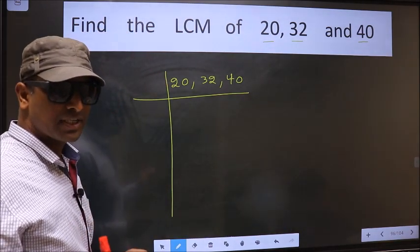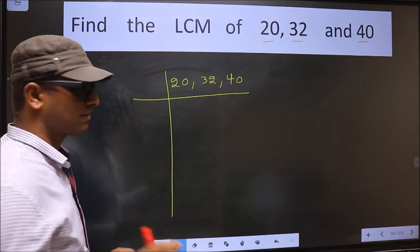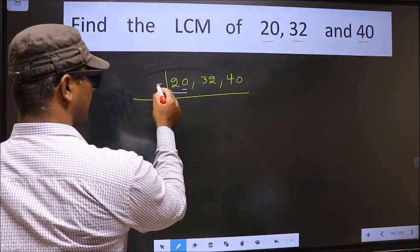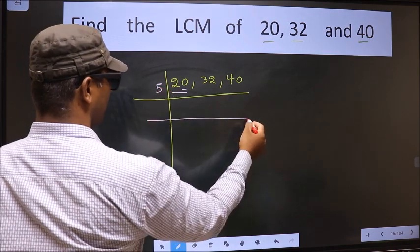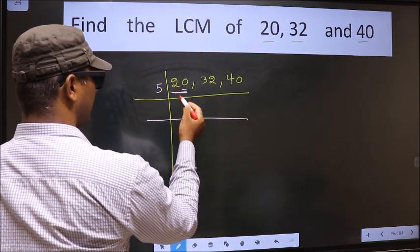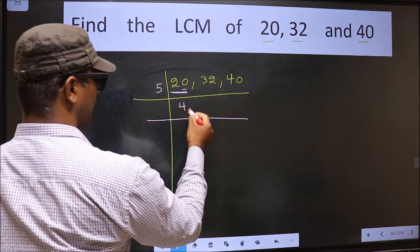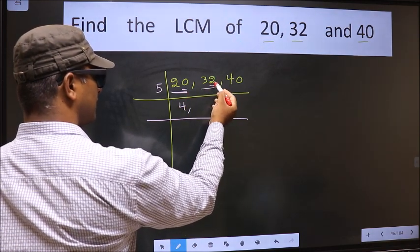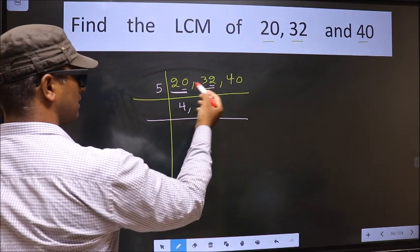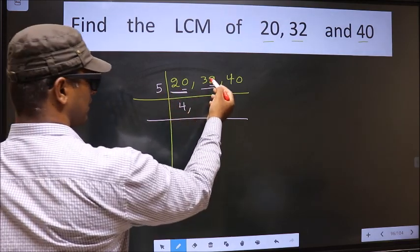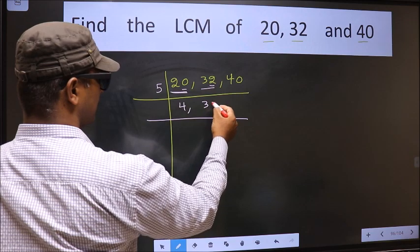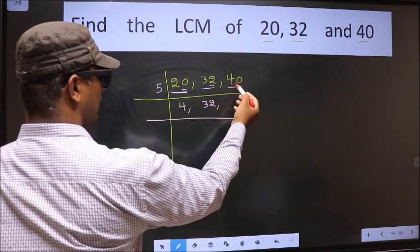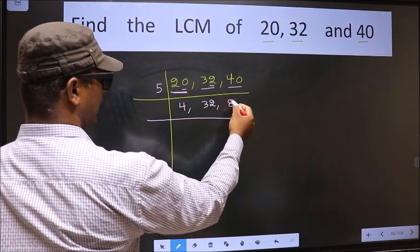Now we focus on the first number, that is 20. Last digit is 0, so we take 5 here. When do we get 20 in the 5 table? 5 times 4 is 20. The other number 32 — last digit is neither 0 nor 5, so this number is not divisible by 5, so we write it down as it is. The other number 40 — when do we get 40 in the 5 table? 5 times 8 is 40.